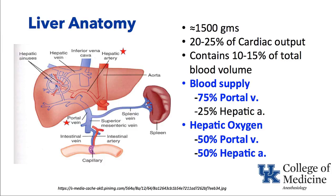The blood supply to the liver comes via the portal vein, shown here with a little star next to it. The portal vein brings in blood from the GI tract and lots of nutrients into the liver. Blood supply also comes from the hepatic artery, which comes off the aorta — specifically off the celiac trunk. About 75% of the volume of blood comes from the portal vein, while about 25% comes from the hepatic artery. However, about half of the oxygen is supplied by the portal vein and half by the hepatic artery.